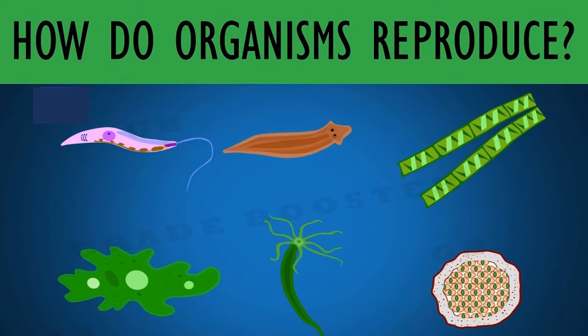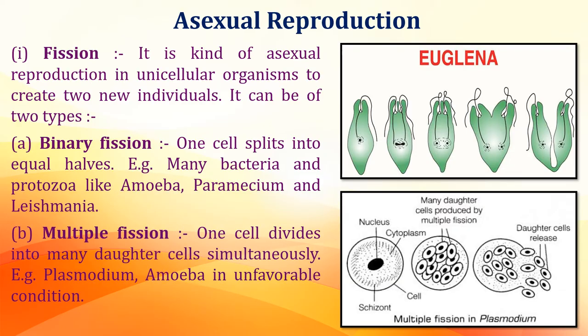In class 10th we study the chapter 'How do Organisms Reproduce.' In the last class we covered the basic structure of this chapter and studied two types of reproduction. The main difference is that sexual reproduction involves two parents — male and female — while asexual reproduction involves only one organism.